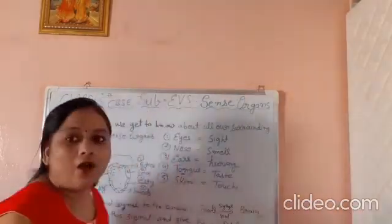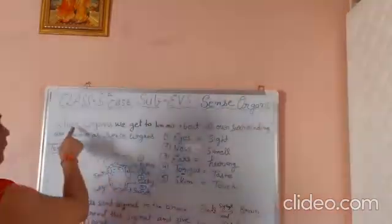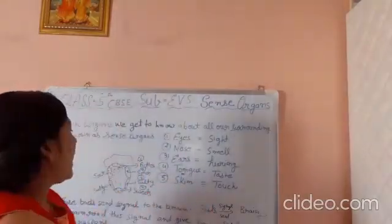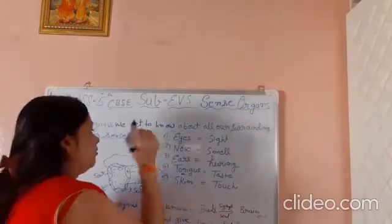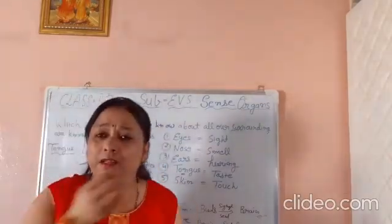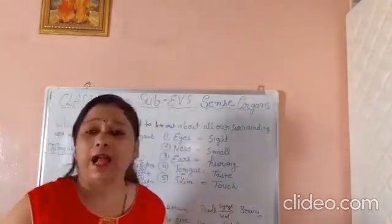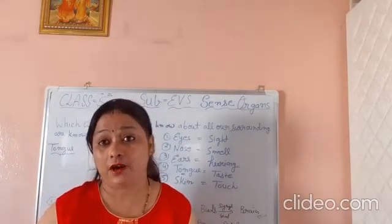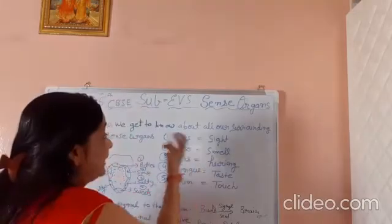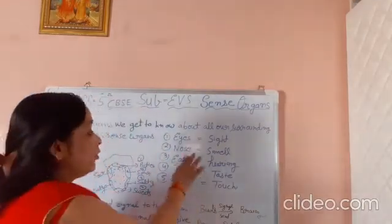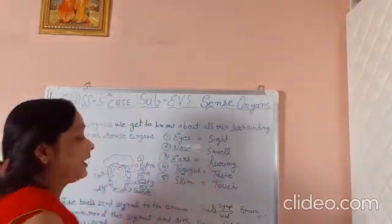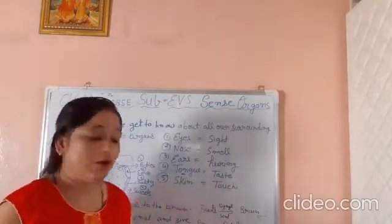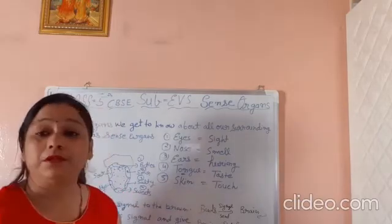Let's revise. How do we define sense organs? The organs through which we get to know about all our surroundings are known as sense organs. With these sense organs we can get to know about all our surroundings. Eyes help us to see, nose helps us to smell, ears help us with hearing, tongue helps us to taste, and skin helps us to touch.